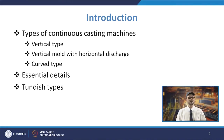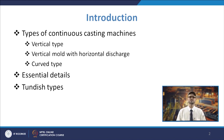The content of this lecture covers the types of continuous casting machines — vertical type, vertical mould with horizontal discharge, and curved type. We will also talk about the essential details: what components are there in the continuous casting setup and their roles, and we will further discuss the different types of tundish.